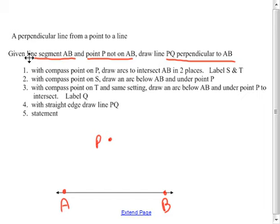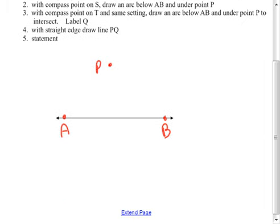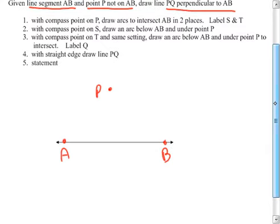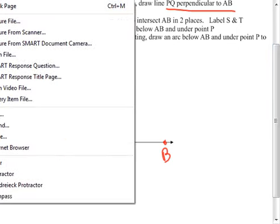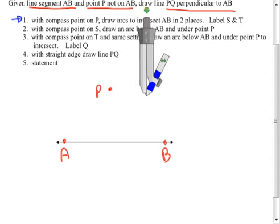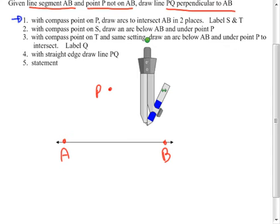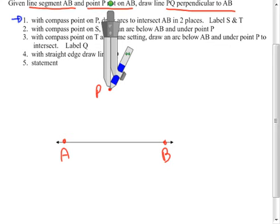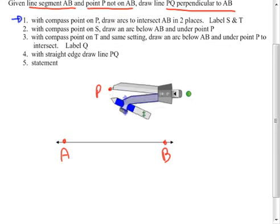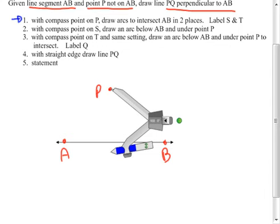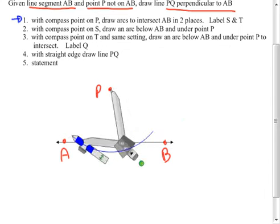What we need in this is two points on the line AB, where P would be at the center where the perpendicular line would be at the center. So when you start the first line with our compass point on P, draw arcs to intersect AB in two places. So put the compass point on P, make it longer than the distance to the line, and then draw the arc so that it intersects the line in two spots.